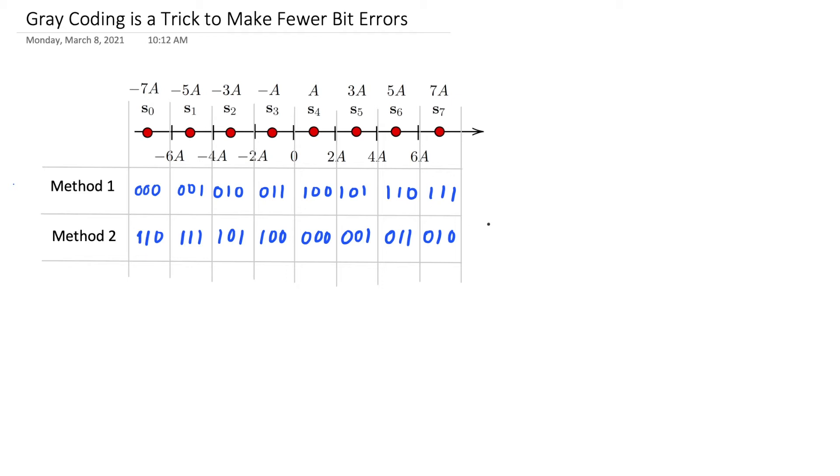In method 2, I'm going to use gray coding, which instead is going to look somewhat strange. But what you'll notice is that between neighboring symbols, I only change one bit at a time. Starting from symbol 0, going to symbol 1, I only change the last bit.